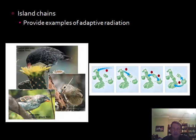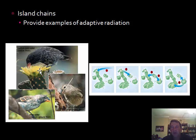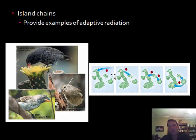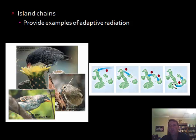When there are many speciation events happening rapidly, that's referred to as adaptive radiation. Darwin's finches from the Galapagos Islands are a classic example. Individuals leave a mainland, go to an island, and if food is available and they have the right beak size, they stay. Over time, populations become established on each island depending on the food source, and if they remain isolated long enough, they can be considered new species.